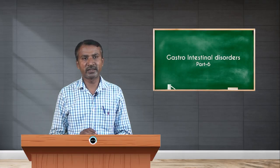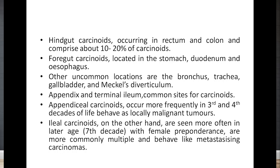Midgut carcinoids are seen in the terminal ileum and appendix and are the most common site, comprising nearly 60 to 80 percent. Hindgut carcinoids occurring in the rectum and colon comprise about 10 to 20 percent of carcinoids. Foregut carcinoids are located in the stomach, duodenum, and esophagus. Other uncommon locations are the bronchus, trachea, gallbladder, and Meckel's diverticulum.